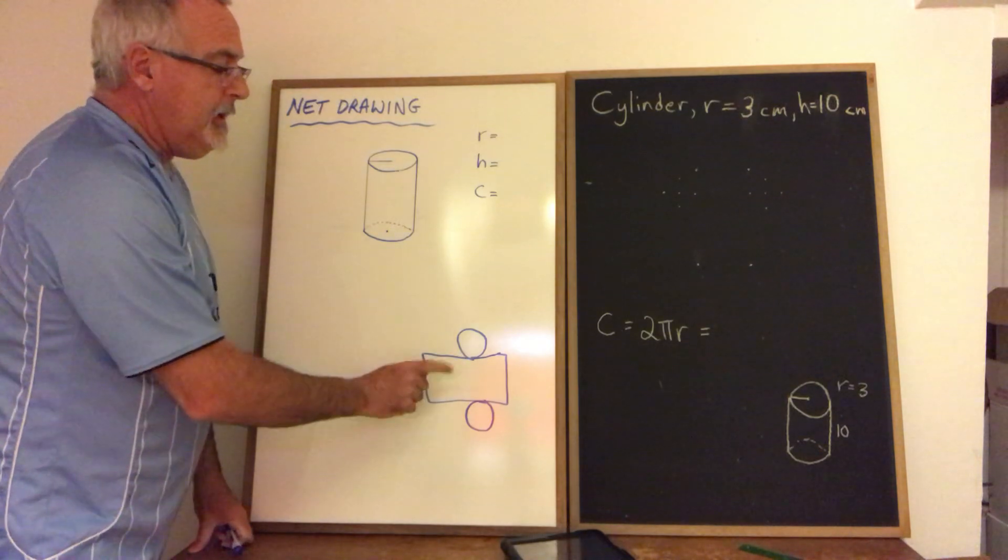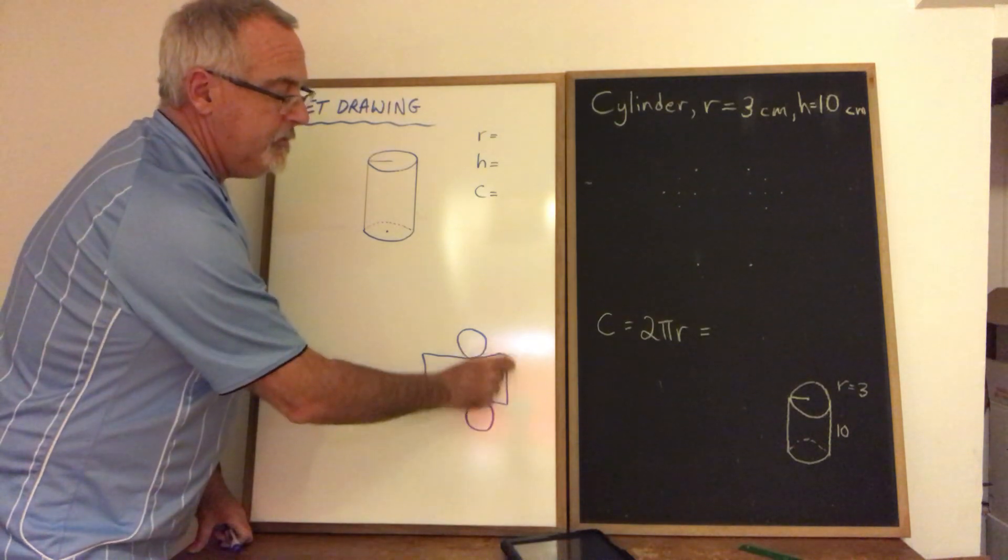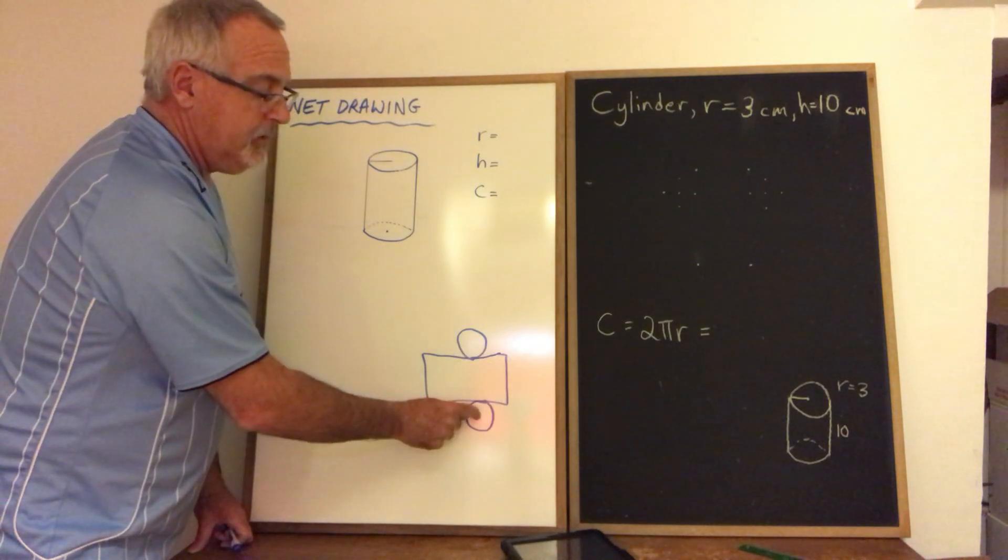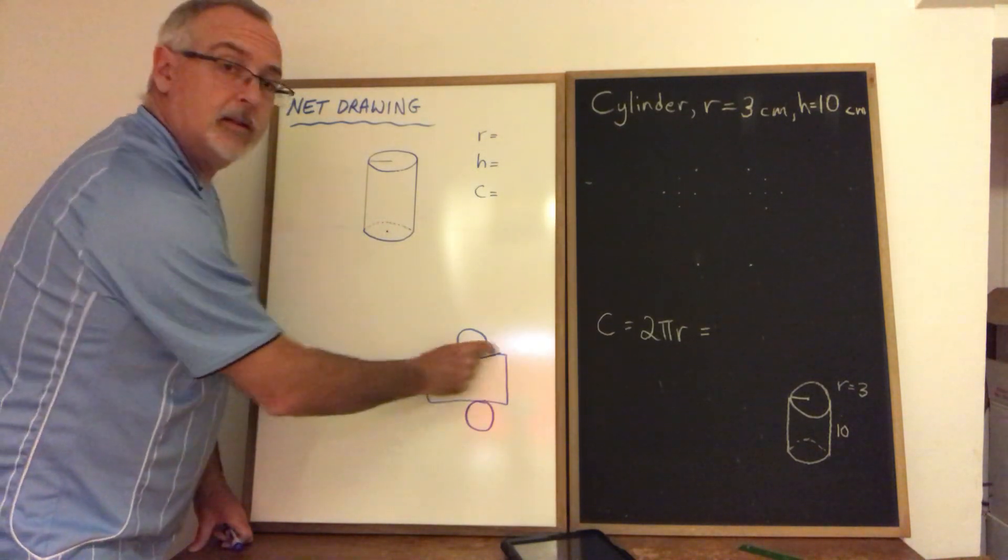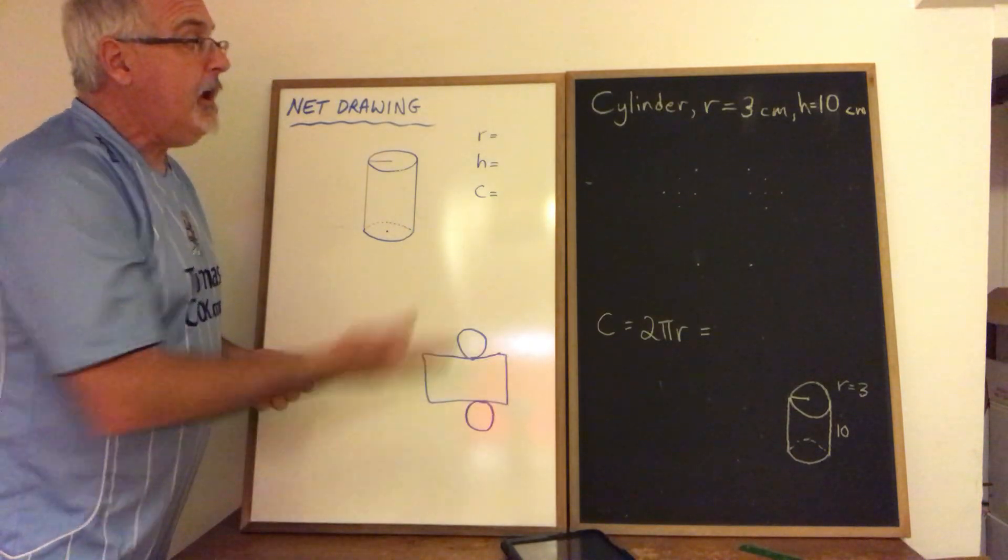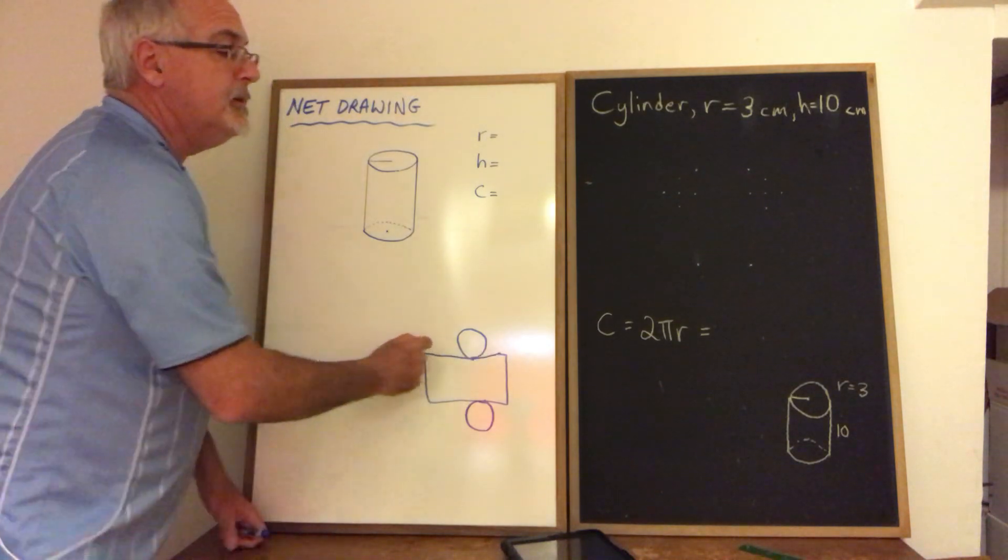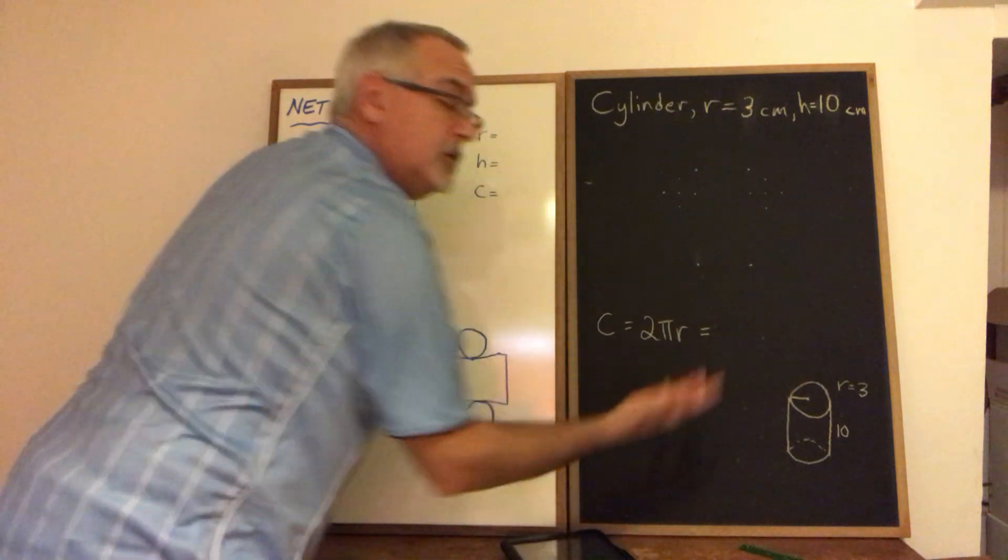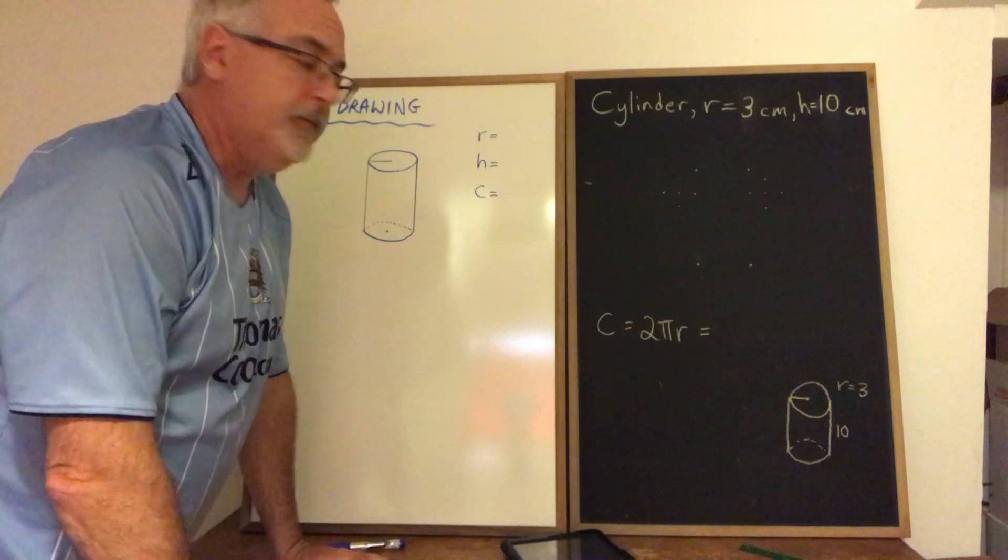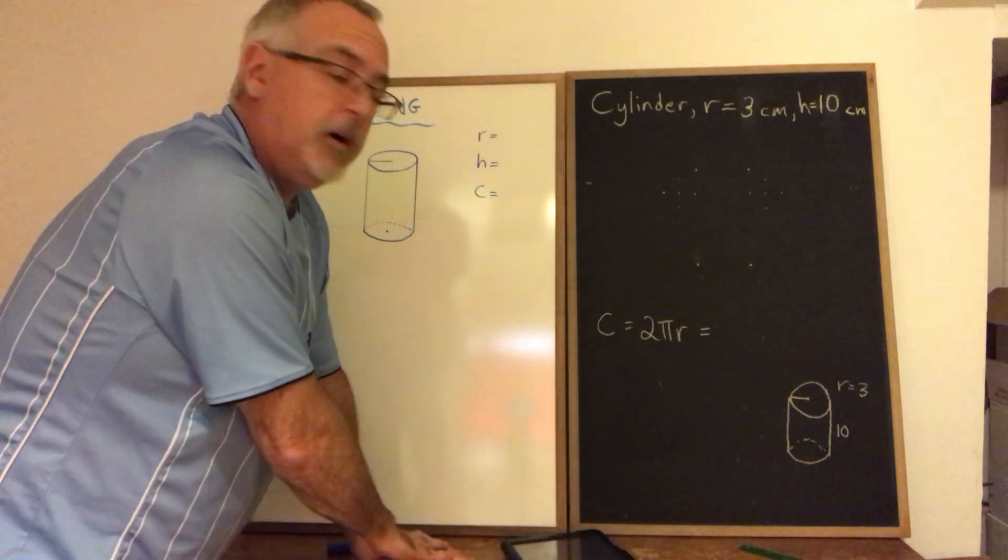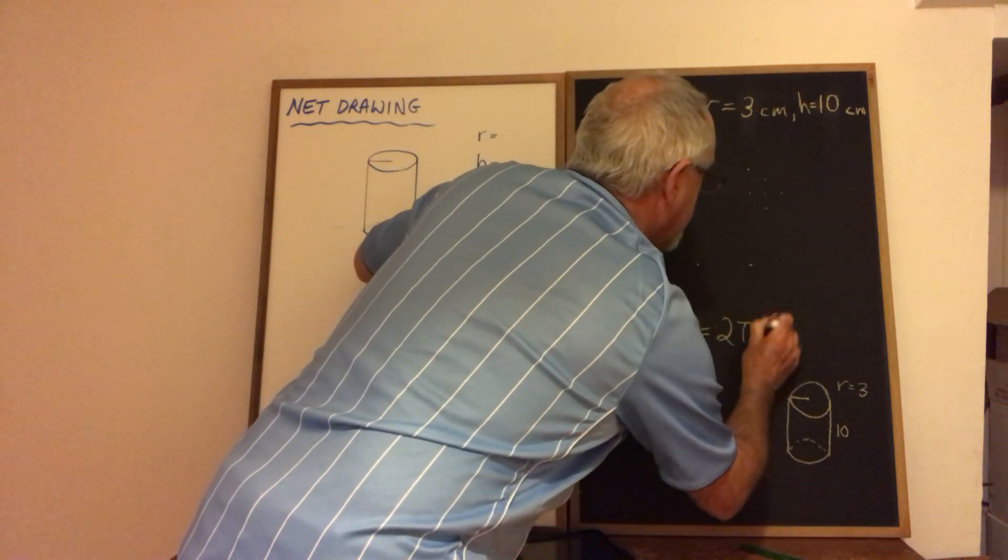To do this we need the height of the cylinder which is shown here and here. And we need the radius of these circles which has been given. But we also need to know how long do we draw this line, this unrolling of the cylinder. And we haven't been given that dimension. That's the circumference of the circle. So this long side of the rectangle is actually the circumference of the circle. Therefore we need to calculate the circumference. We're using the circumference formula which is 2 pi r. In this case it's going to be 2 times pi times 3.